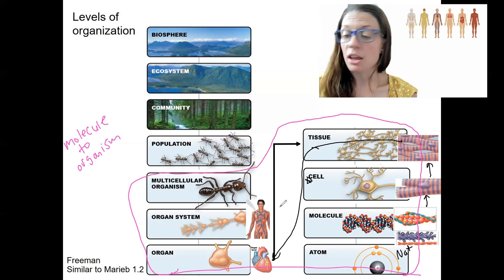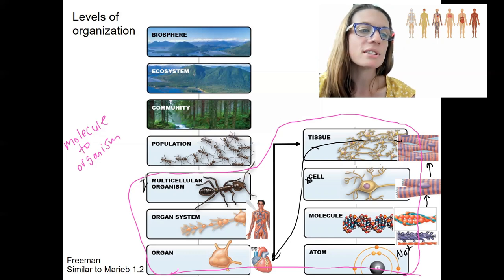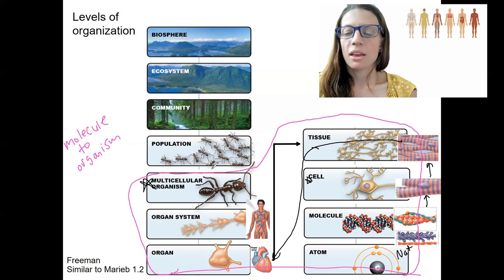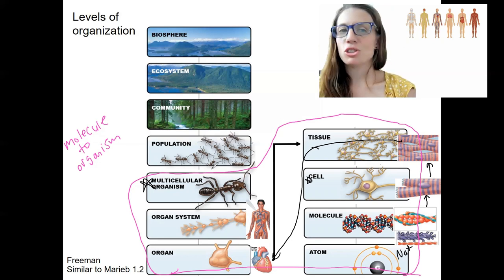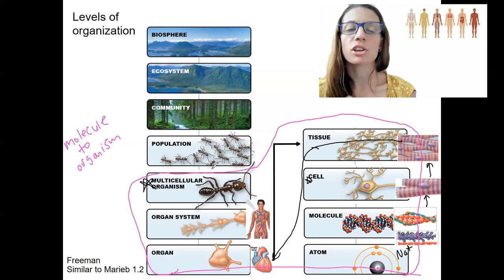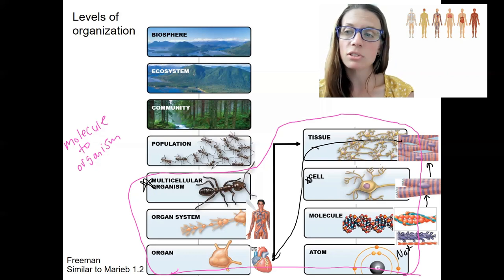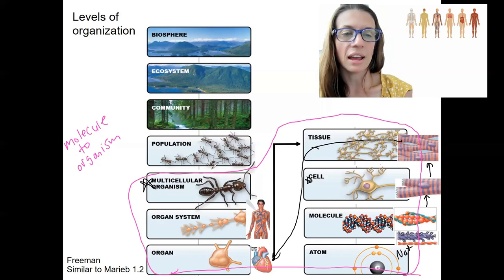So integration of organ systems is also important for a functioning organism. So then a multicellular organism is going to be composed of multiple organ systems that are then required to each do their job, work together, communicate to carry out the body processes and maintain life. So physiology is the study of all of these levels and the processes of all those levels. Anatomy is the study of the structures of all these levels. And we're going to be looking at all these levels.